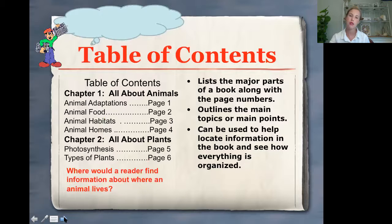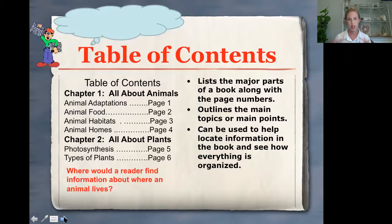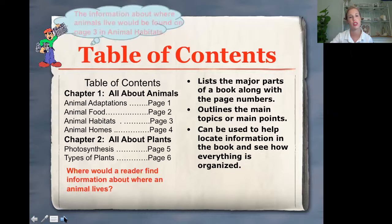The next one is a table of contents, and that's in the front of the book. It tells you the chapters, the pages, and the subtitles in a story. It's another way to find information in your nonfiction texts.